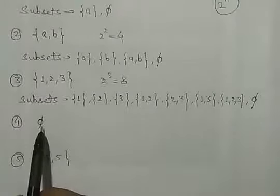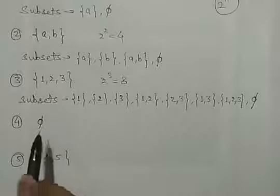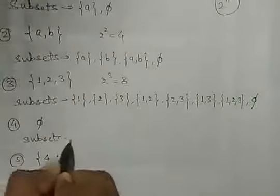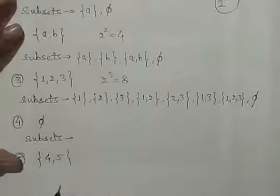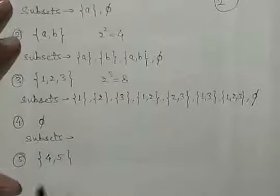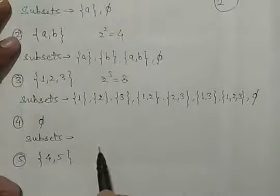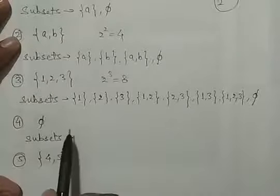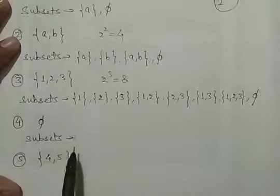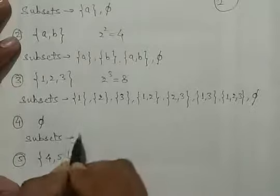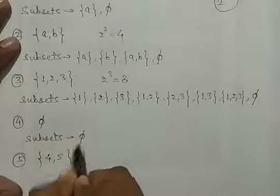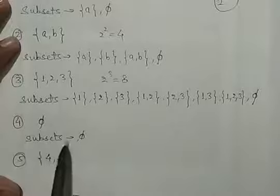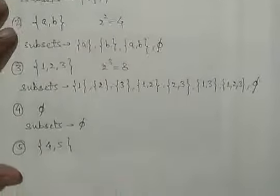∅ means null set. तो null set में तो कोई element है ही नहीं. हमेशा किसी भी set का एक subset जरूर होता है, और वो है null set ∅. तो इस ∅ का subset भी क्या हो जाएगा — ∅ यह null set ही हो जाएगा.